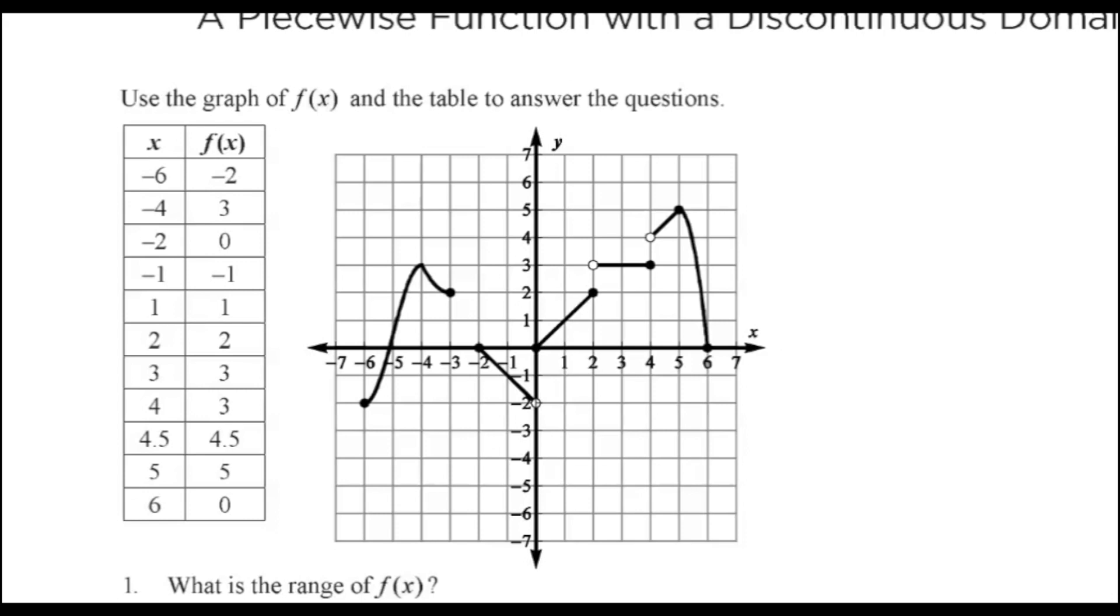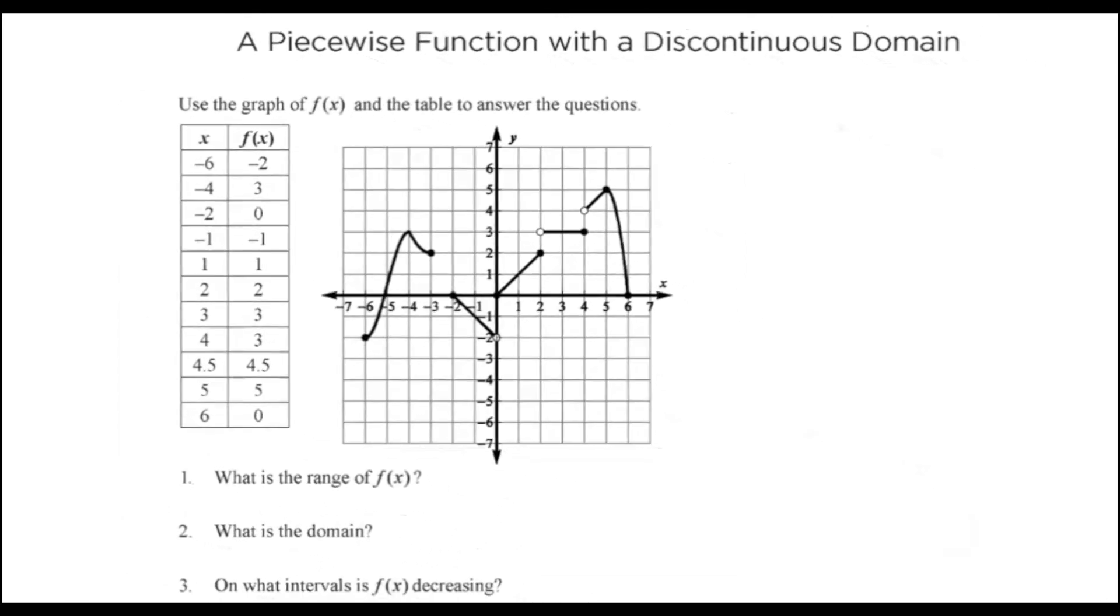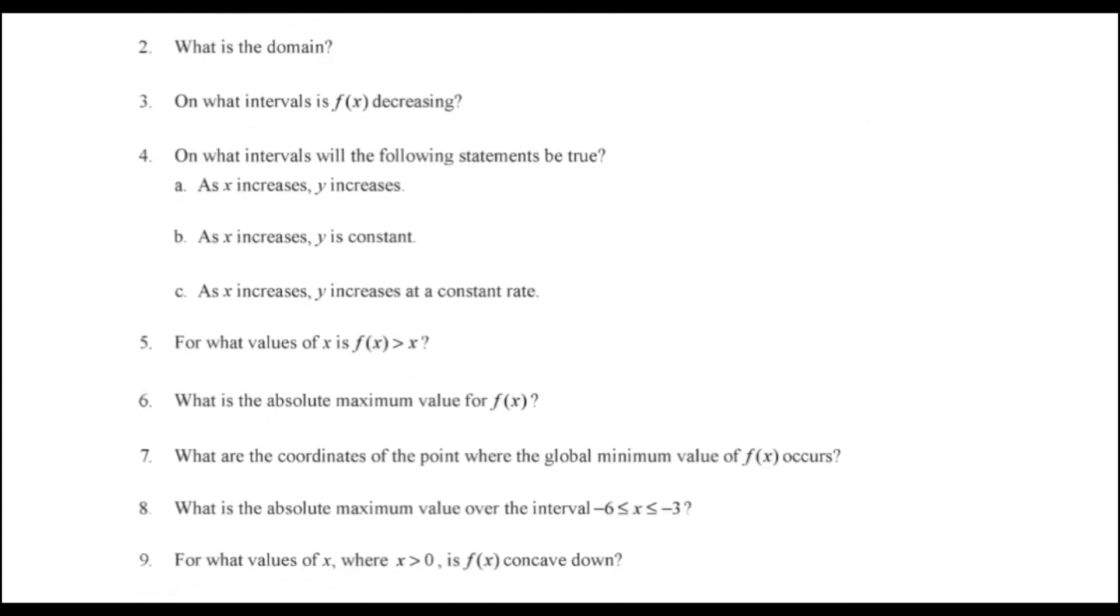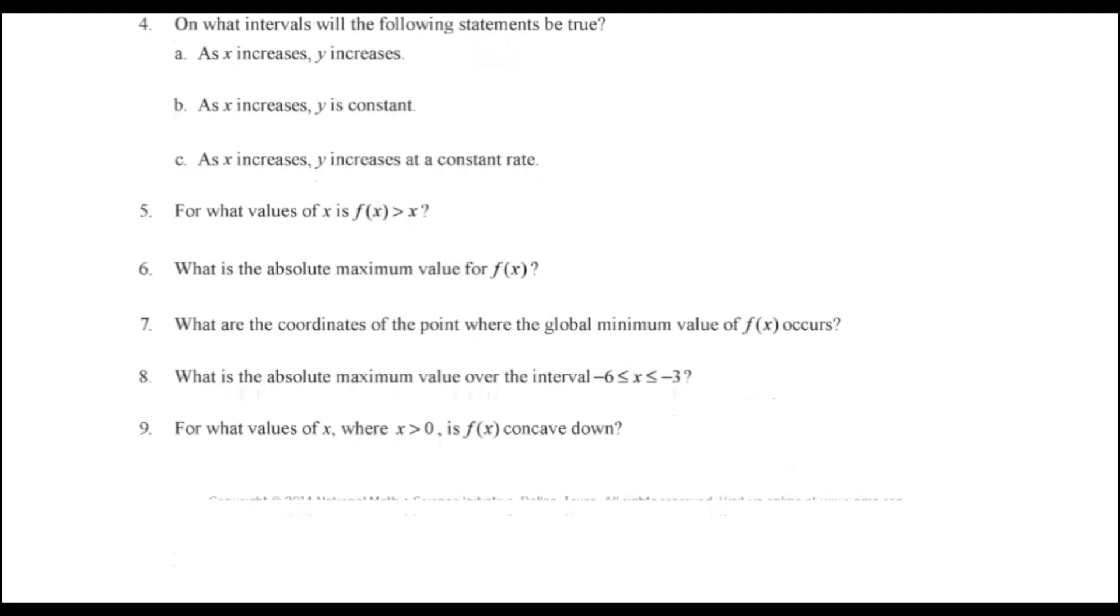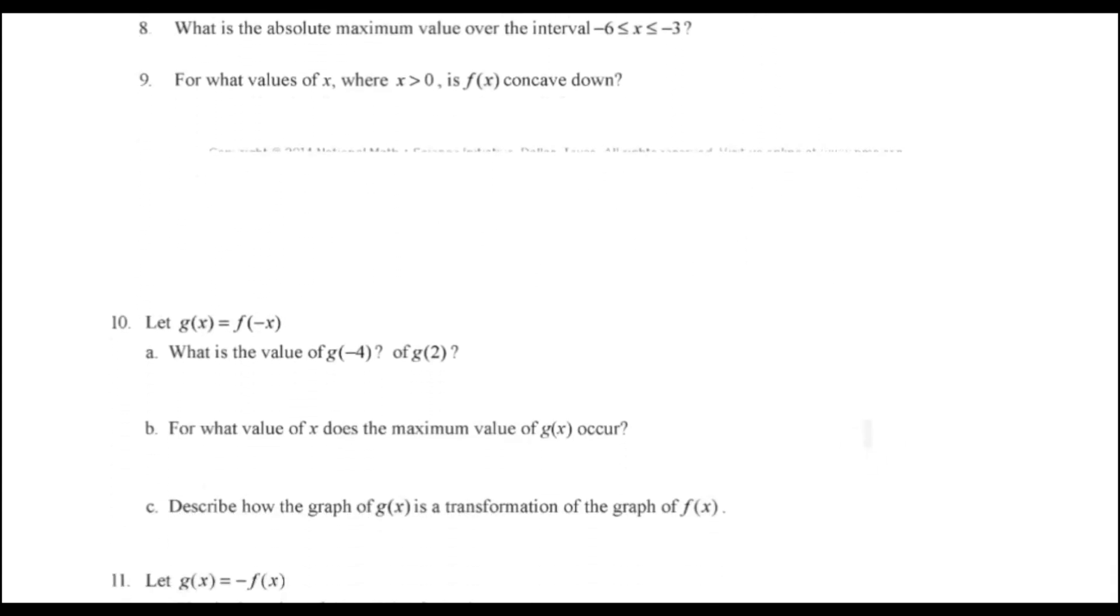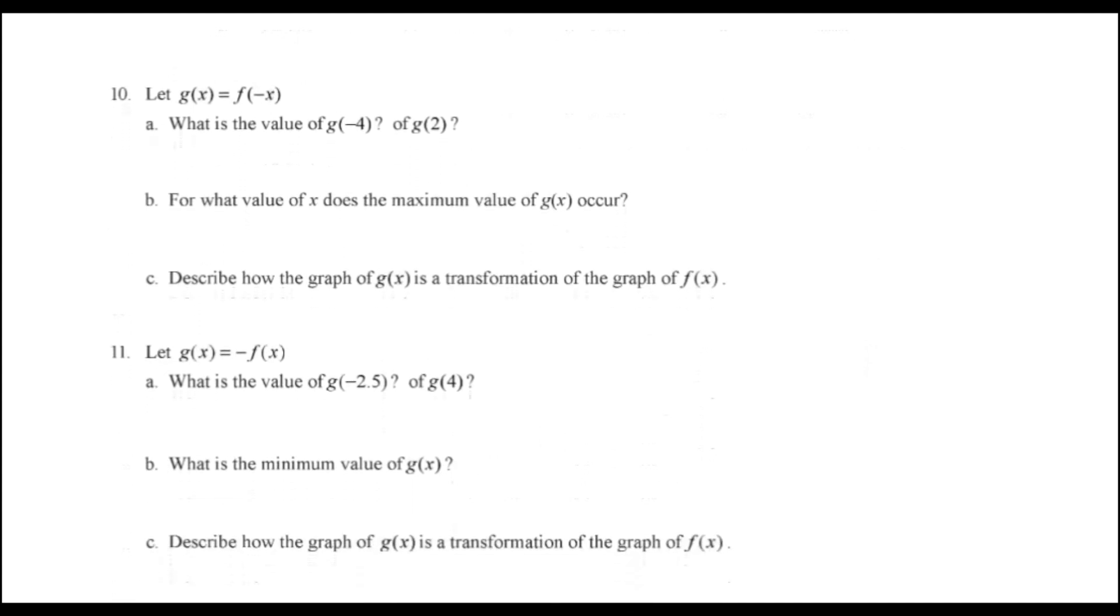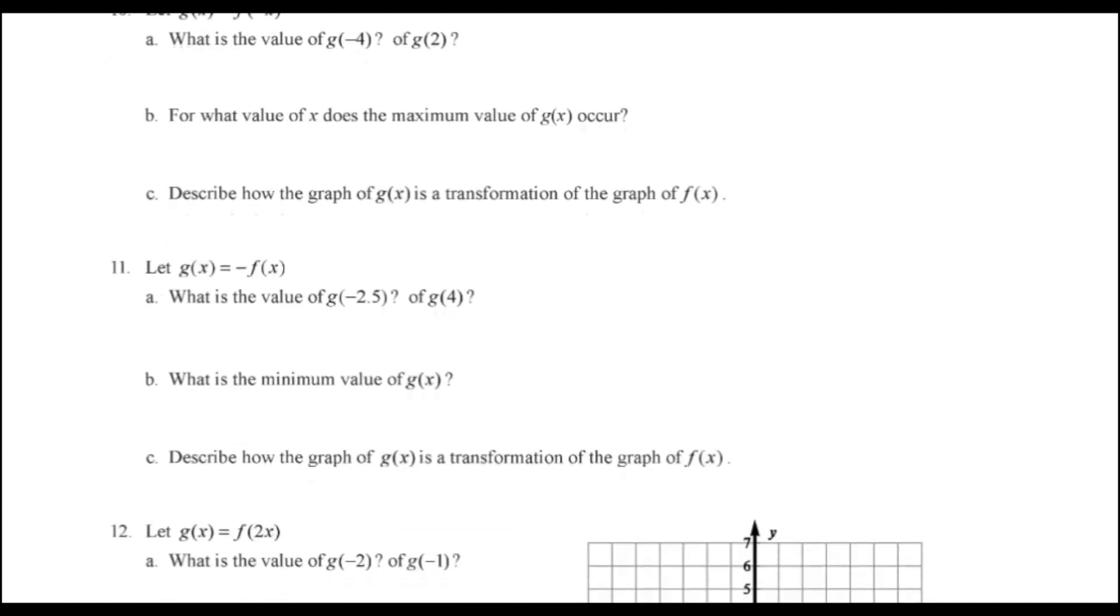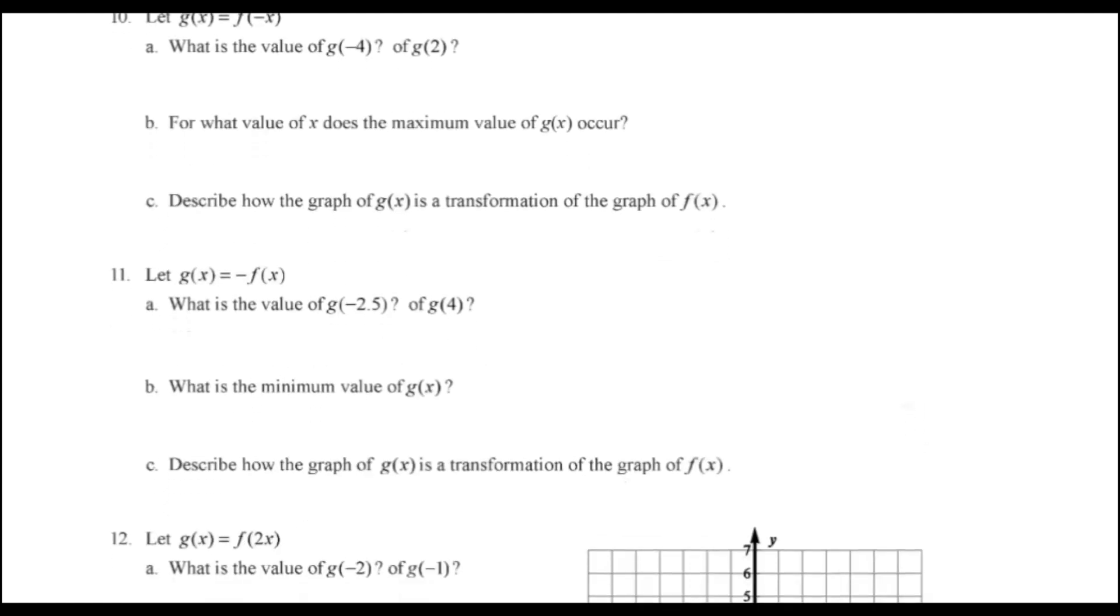So what the first page of problems asks the students to do, it asks for certain characteristics, like the range of the domain, where it's decreasing and constant. It even brings in concavity in number nine. Numbers 10 and 11 start asking for specific values of another function, a transformation function G, and it performs several transformations on the original function F that we were given the graph and the table for at the beginning of the lesson. It asks for where the maxes occur, the minimums, and it asks for what specific transformations are taking place.